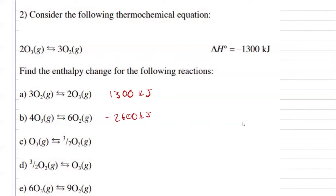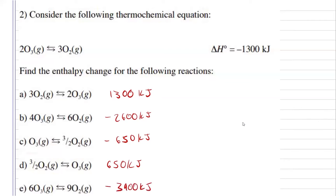If we take our reaction and divide it by 2, well it's going to release half as much energy, so negative 650 kilojoules. Now if we were to reverse the reaction for C, instead of releasing 650 kilojoules, well now it's going to require 650 kilojoules. And lastly, if we multiplied our original reaction by 3, well we're going to release 3 times as much, so we're going to release 3900 kilojoules.